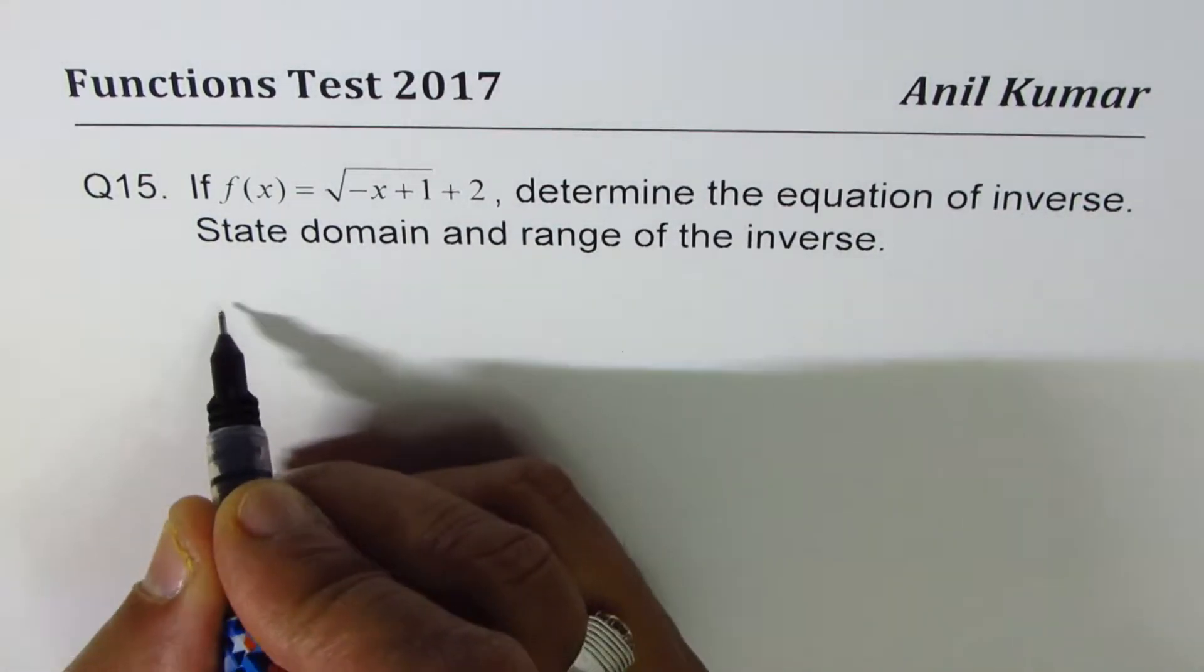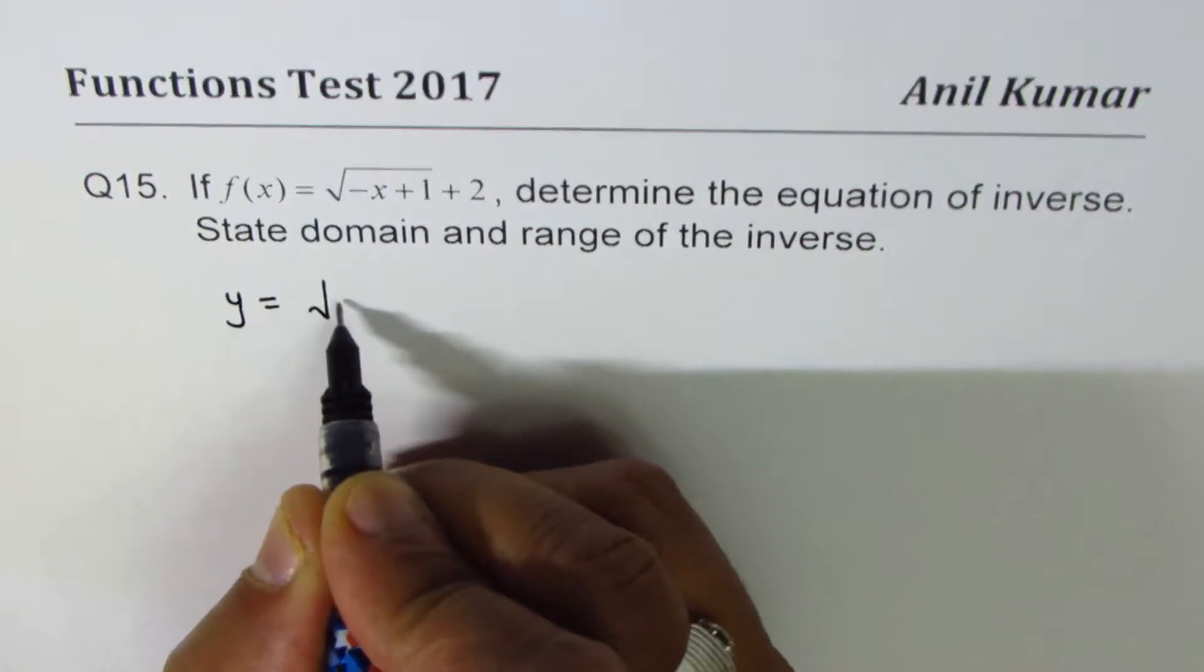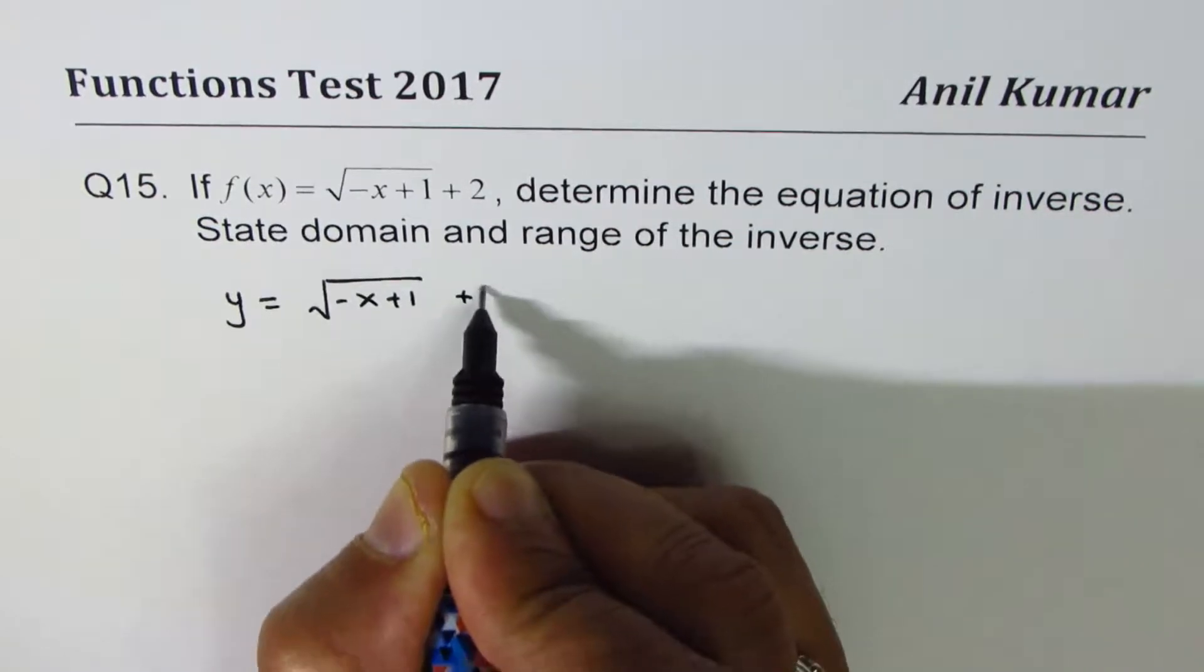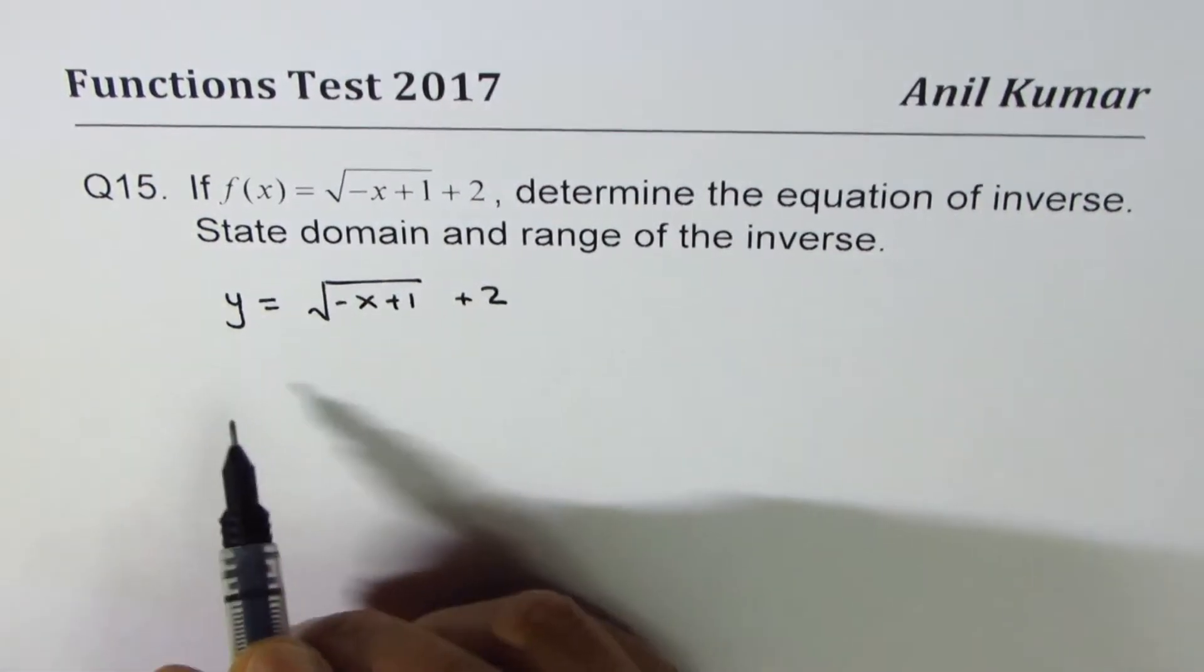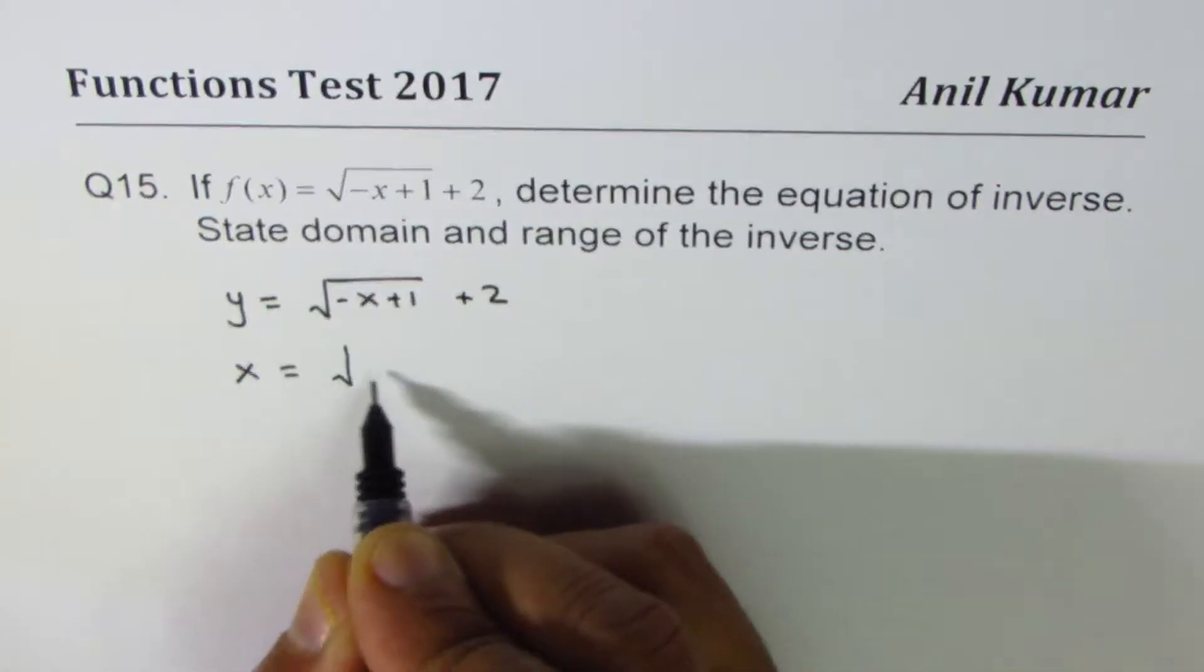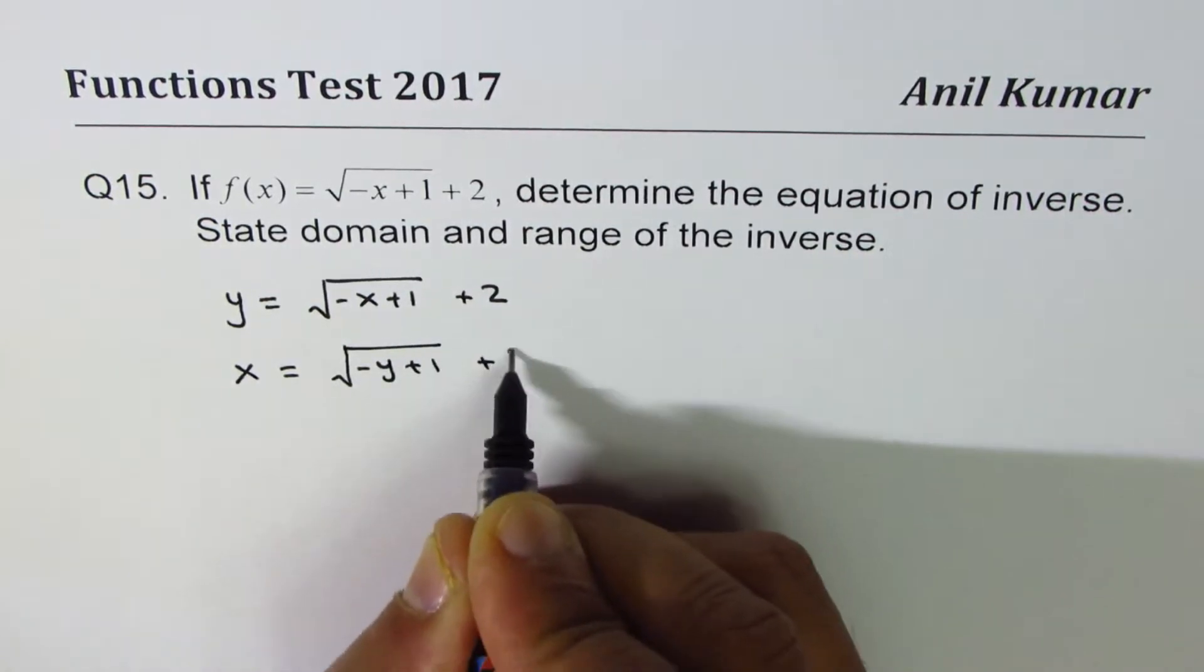Now to find inverse, what should we do? We first write the function as y equals square root of minus x plus 1 plus 2. And then we swap x and y. So we can write this as x equals square root of minus y plus 1 plus 2.